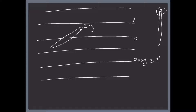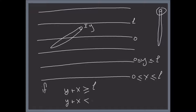Let X be the projection of the needle along the same direction, so X will be between zero and L. The needle crosses the line above if Y plus X is greater than or equal to L, and it crosses the line below if Y plus X is less than zero. For a given value of Y, the probability of crossing is P(Y).